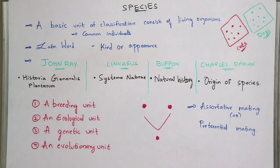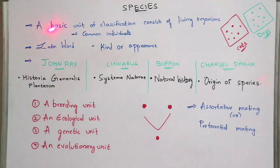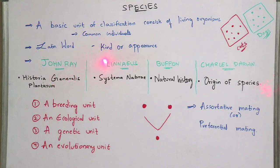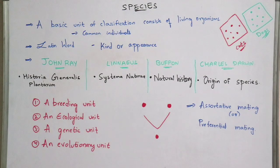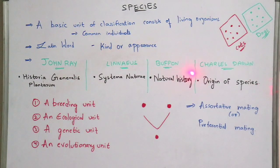This is just common examples. Some of the examples you can take like Apis indica, Apis dorsata, Apis mellifera. Coming to the next point, this species is a Latin word, and the meaning of species is 'kind or appearance.' Normally there are 4 scientists involved here, and each of the scientists wrote their own book which consists of information on species.